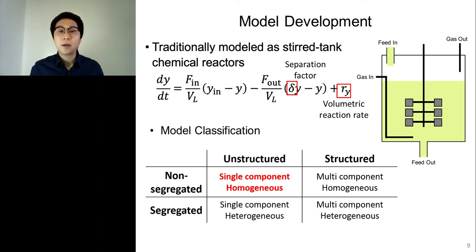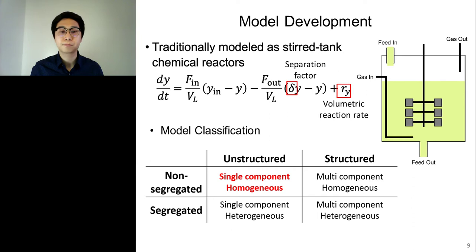Looking into the model development, bioreactors have been traditionally modeled as chemical reactors. A material balance is set up as an equation in the slide in terms of the concentration of species of interest. In this equation, the delta term is a separation factor specifying the concentration in the outlet — for biomass concentration, the delta term equals 1 for fed-batch operation and 0 for perfusion operation. The R term is the volumetric reaction rate, including both biological and chemical reactions. Biological reaction rate models can be classified as unstructured or structured and non-segregated. The macroscopic model was developed as an unstructured, non-segregated model, meaning that the cell population is treated as a single component and all cells are considered identical.